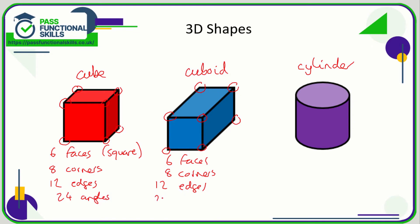That is the same for the cuboid as well. A cylinder has a circular top and a circular base, so in total it has two circular faces, and it also has a curved surface — so it has three faces. It has zero corners, but it has two edges: one edge at the top and one edge on the bottom.